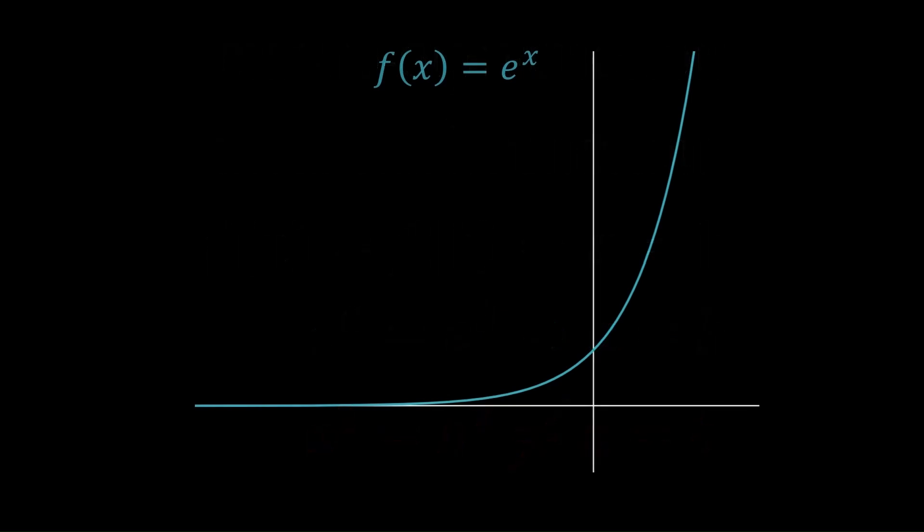This might make more sense if you look at it graphically. Basically, an invertible function needs to pass the horizontal line test. To pass the test, any horizontal line you put on the graph has to cross the graph at most once. It's not allowed to cross the graph twice or three times. It's pretty clear that for e to the x, it's not possible for a horizontal line to cross the graph more than once. So it passes the horizontal line test.